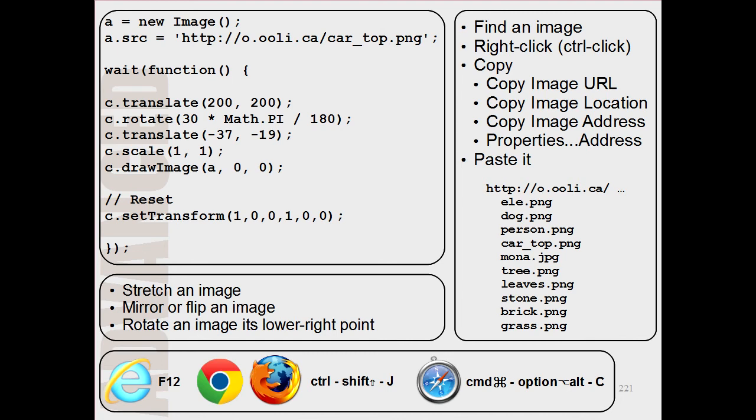So why don't you try to adapt this example to do other types of transformations? For example, why don't you try stretching an image? Why don't you try mirroring or flipping an image? Or why don't you try rotating an image around its lower right instead of around its upper left?